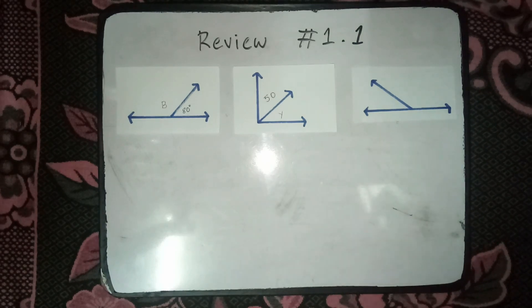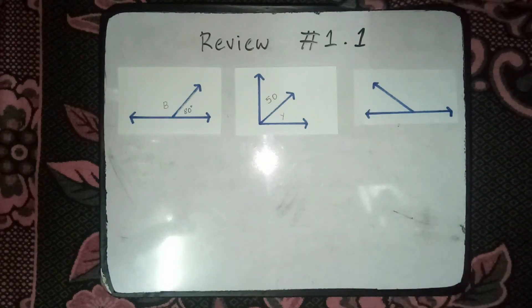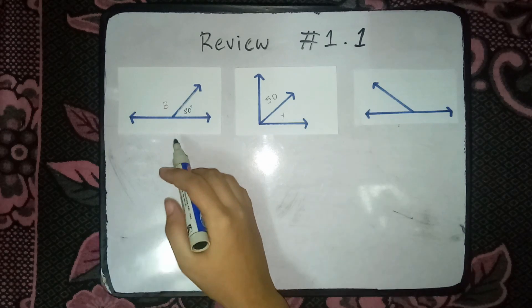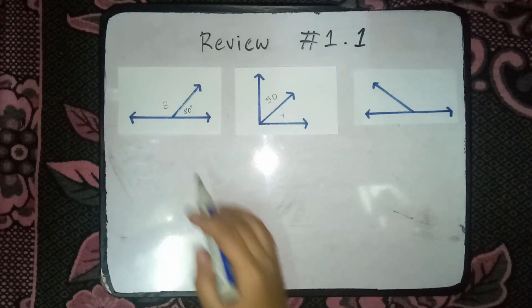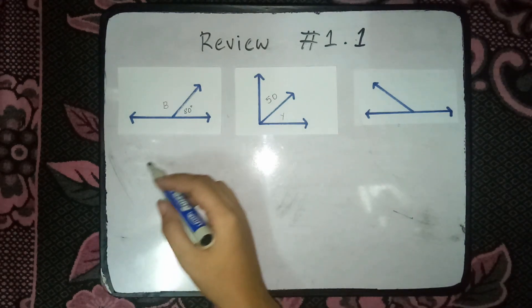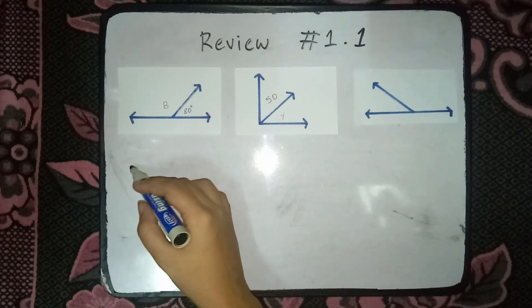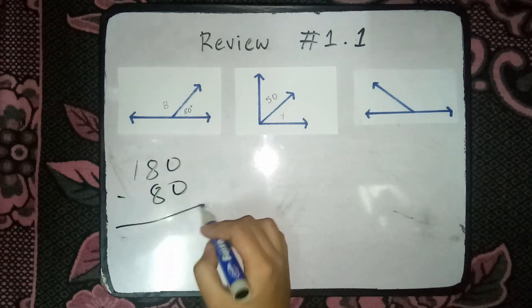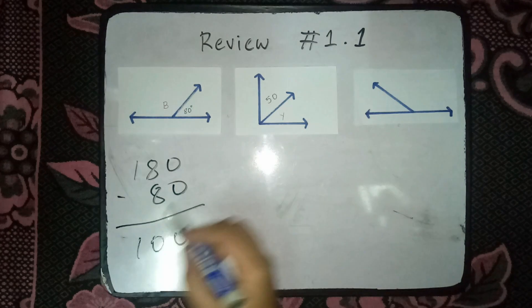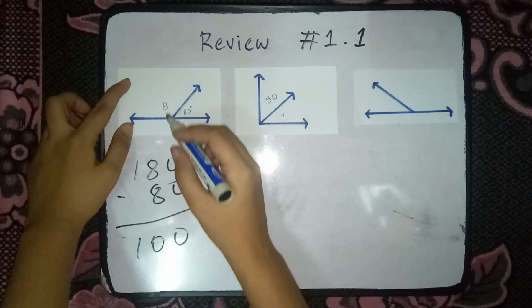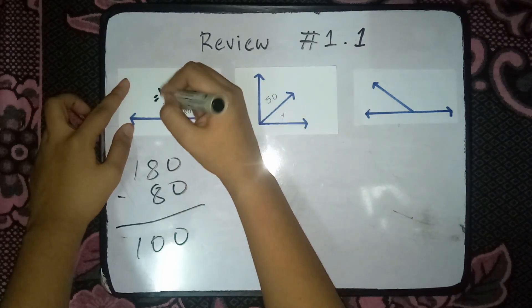Okay, so sa number 1, this is supplementary. Ang supplementary kapag pinag-add yung dalawang angle is equals to 180 dapat. So, we have 180 minus 80 dapat, 100. So, ang angle B is equals to 100.